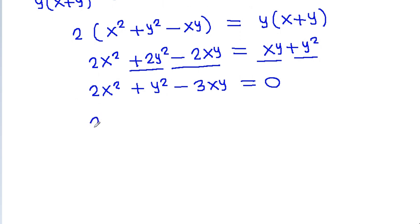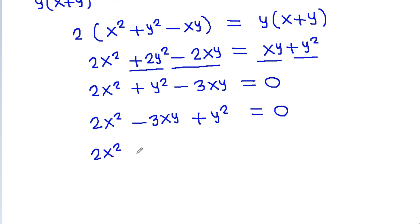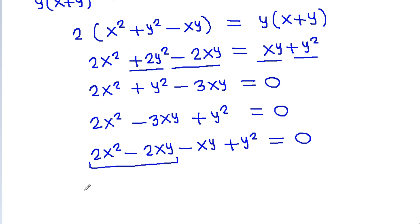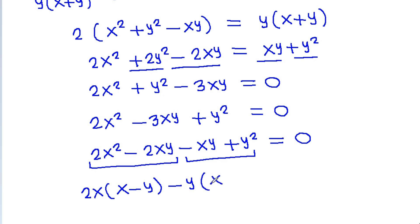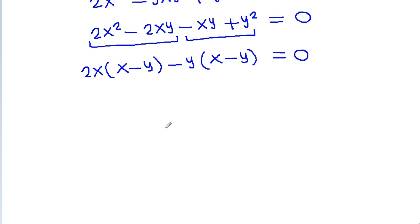So 2x squared minus 3xy plus y squared equals 0. We factor this as (2x minus y)(x minus y) equals 0.